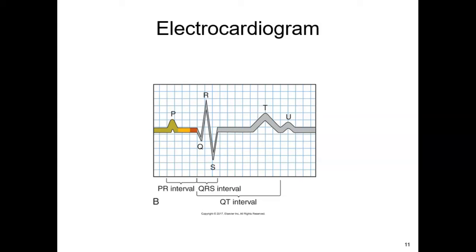We'll learn more about this under dysrhythmias, but in general, the time intervals represent how long a signal takes to get from one area of the heart to the other. We're interested in how long it takes the signal to travel from the atria to the ventricles, how long it takes the ventricles to contract, and how long it takes for the ventricles to rest and repolarize. Different disorders can cause changes in these intervals, and some can be very dangerous, some annoying, and some may just be a result of medications.